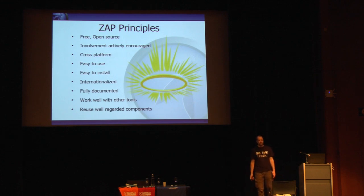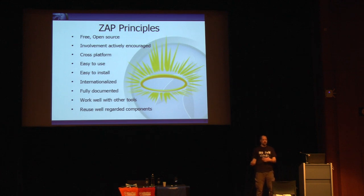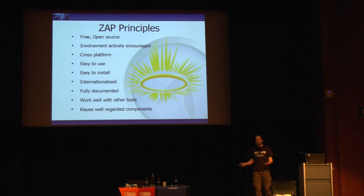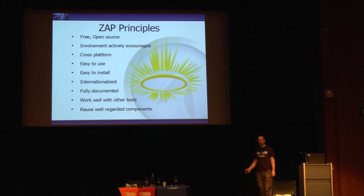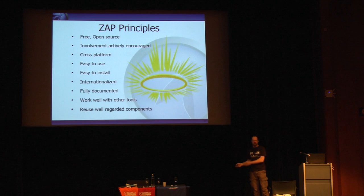We aim for ZAP to work well with other tools. We try to make sure we can interact with and launch other tools, and other tools can use ZAP. We're happy to make changes to make that easier even if it doesn't directly benefit ZAP. We also try to reuse well-regarded components rather than reinventing the wheel. In some cases we've created new things, made them into components other tools can use, and deliberately licensed them so they can be used by commercial tools.